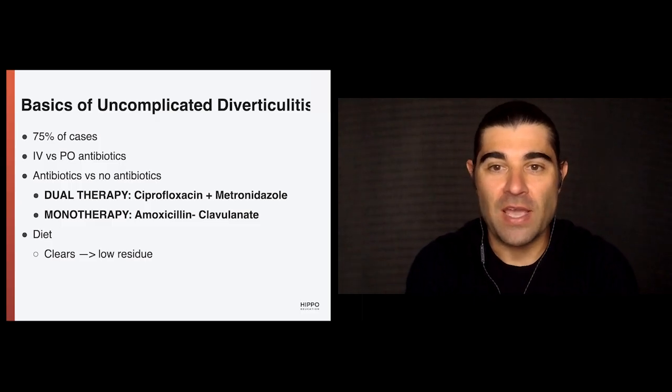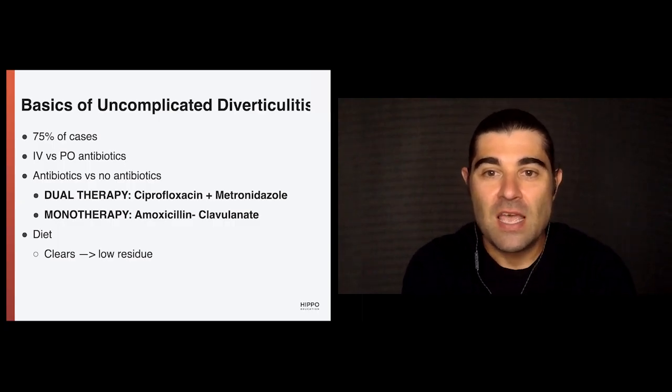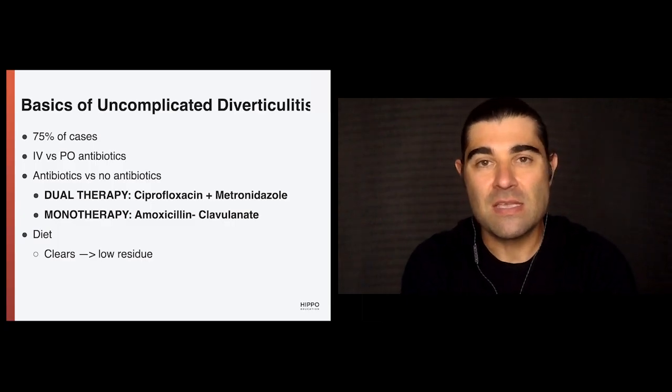The evidence supporting no antibiotics isn't what you'd call high quality — the numbers are too small and there are too many biases within those trials to call this ready for prime time. The current standard of care in the U.S. is still to give antibiotics for uncomplicated diverticulitis. The bigger pearl is that it doesn't necessarily have to be IV — starting patients on oral antibiotics is a reasonable approach.